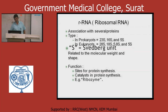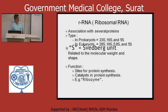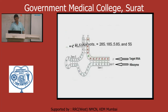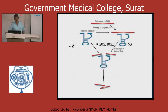Ribosomal RNA is for protein synthesis and catalyzes the reaction. If RNA acts as a catalyst itself, it is called a ribozyme. A ribozyme makes a strand parallel to a target RNA and cleaves it — that is how ribozymes work.